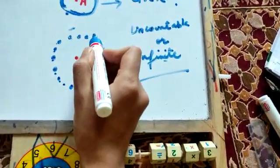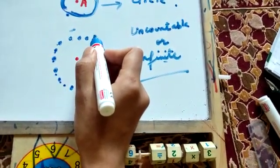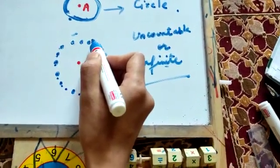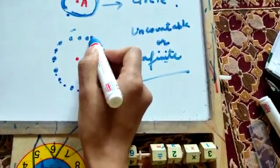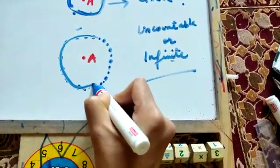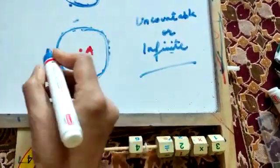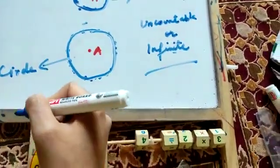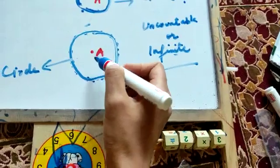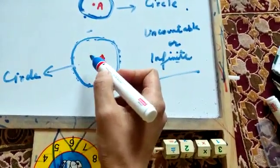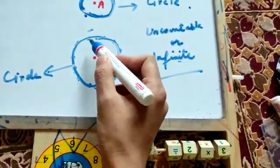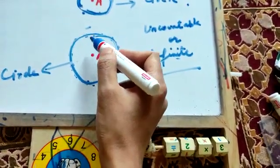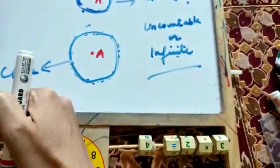So when we join all these points, what figure will we get? When we join all the points marked around point A, we will get a circle. So a circle is formed when all the points are at the same distance of 2 cm from point A, and when these points are joined.